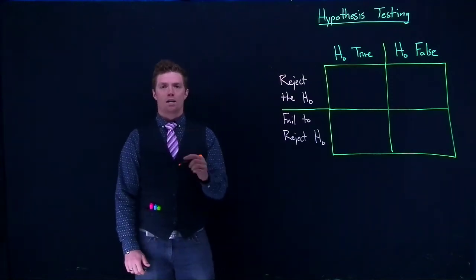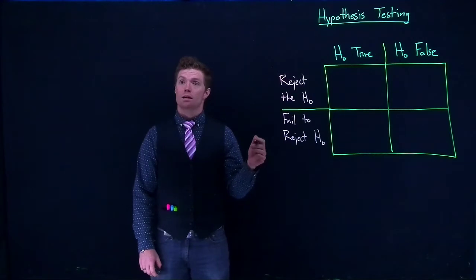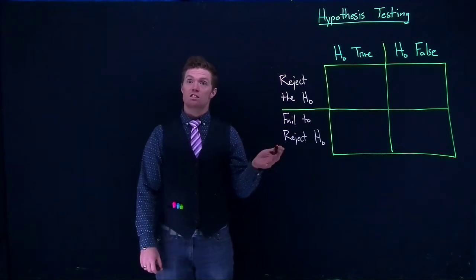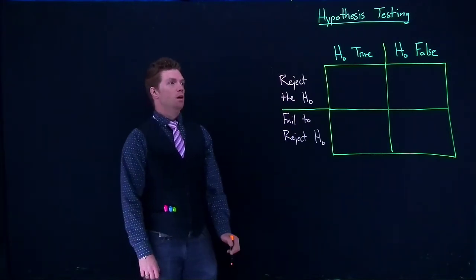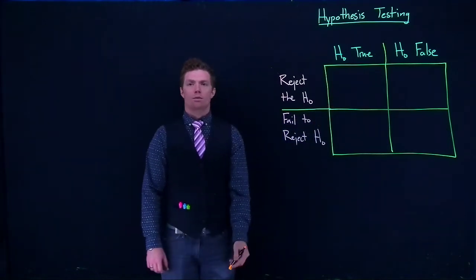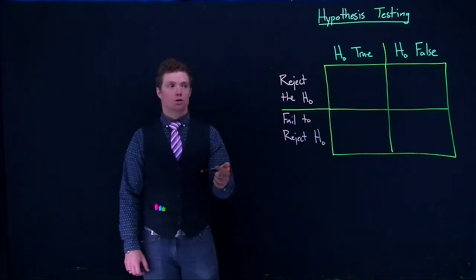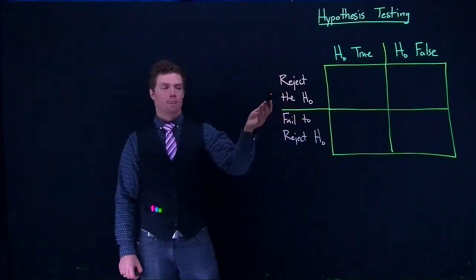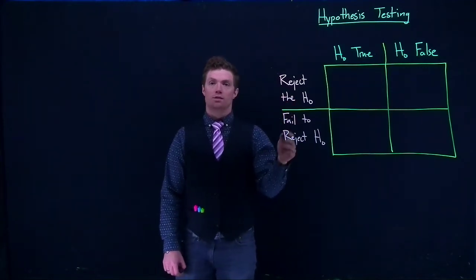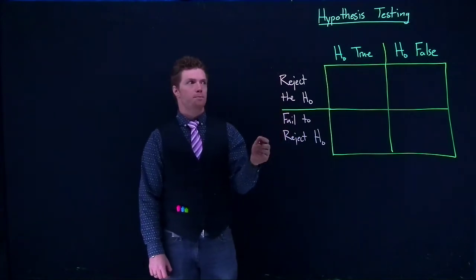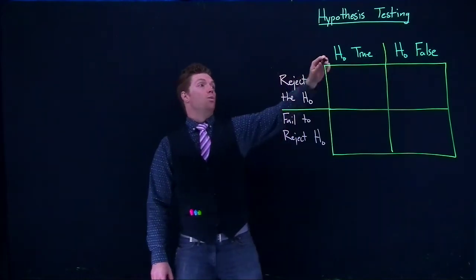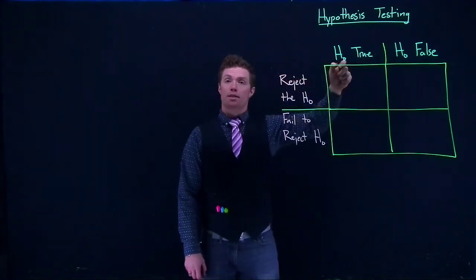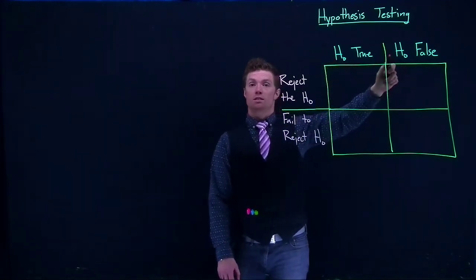Let's talk about some of the possible outcomes of our conclusions when we do hypothesis testing — how sometimes we can make a good decision and sometimes an incorrect decision. I have this little grid up here and it represents all possible outcomes. Our conclusion can either be that we reject the null hypothesis if our p-value was small, or we fail to reject our null hypothesis if our p-value is big. Now what we don't know is what some omniscient being out there knows: whether the null hypothesis is actually true or actually false.